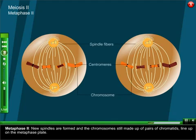Metaphase two: New spindles are formed and the chromosomes still made up of pairs of chromatids line up on the metaphase plate.